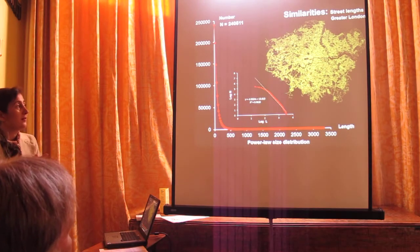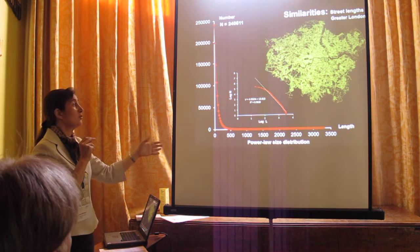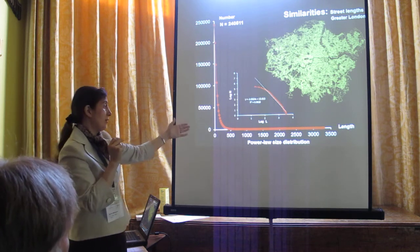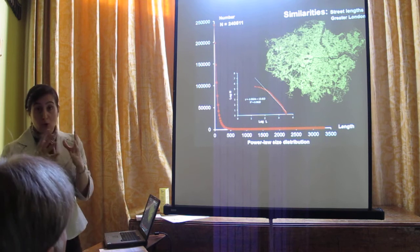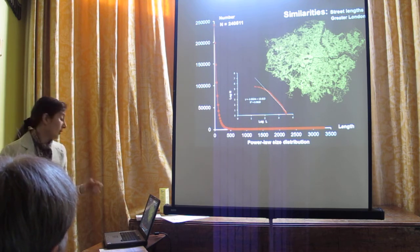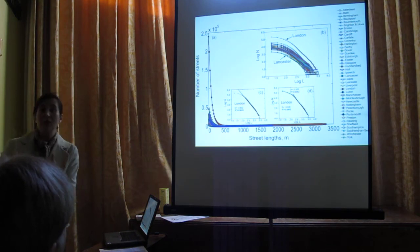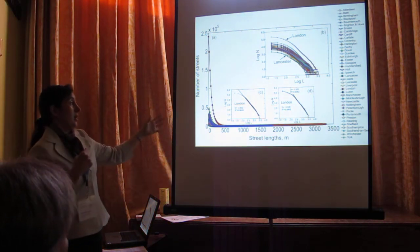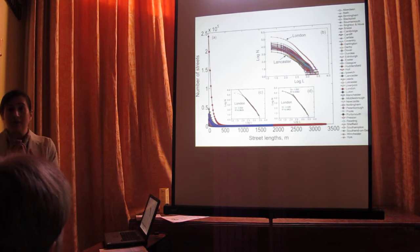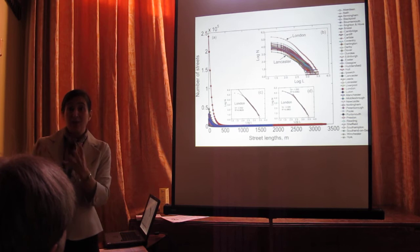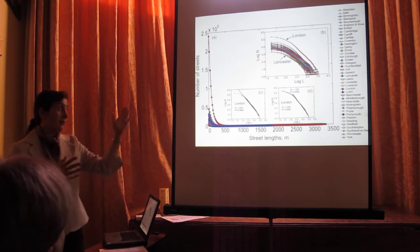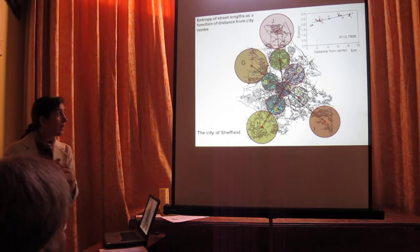Looking at similarities in street length distribution: for London, the street network follows a power law size distribution, as shown in ordinary and log-log plots, meaning there are many short streets and very few long ones. I looked at all 41 British cities and found they also follow a power law size distribution — this is a unique and consistent feature across all 41 cities. I also used the maximum likelihood method for exploring this power law distribution and found similar results.